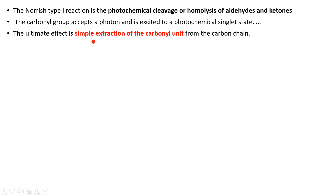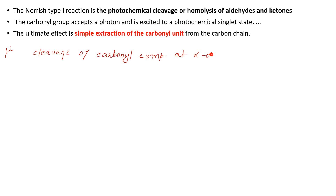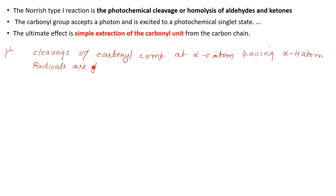Let's go directly to what is Norrish 1. Norrish 1 is basically cleavage of carbonyl compounds - that means aldehydes and ketones - at the alpha carbon atom. The alpha carbon is the carbon attached to the functional group, which has an alpha hydrogen atom. Because it's a photochemical reaction, new radicals are formed, and most importantly the carbonyl C=O group is eliminated.